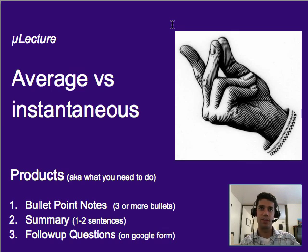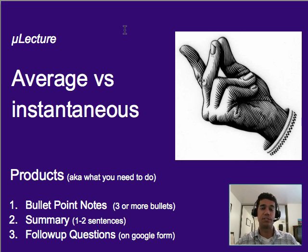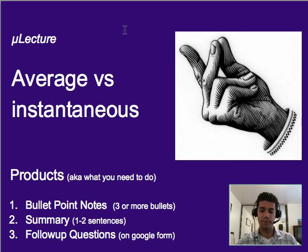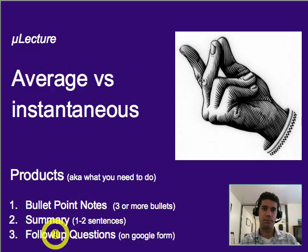Alright, so let's continue with this collection. We've talked about speed and velocity. We're now going to talk about the idea of average versus instantaneous, because we need to know what those mean with respect to speed and velocity, but also just in general what they mean. Remember, you need three bullet points worth of notes, a one-to-two sentence summary, and to do the follow-up questions.